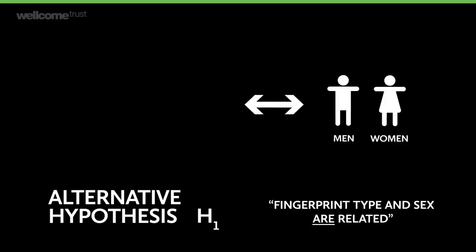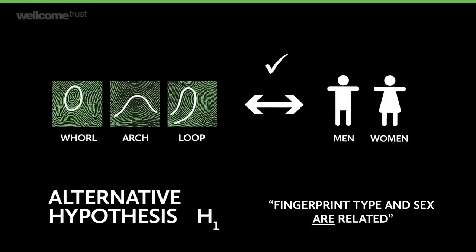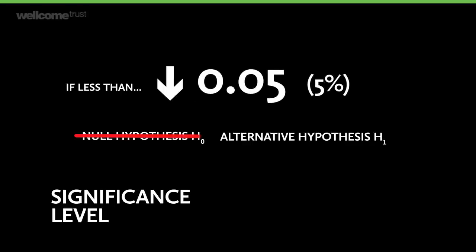The second hypothesis is the alternate hypothesis — the other possibility — that men and women do tend to have different fingerprint types. In that case, we would say there is an association between a person's fingerprint type and their sex. The significance level is the value we choose for how strong the evidence should be before we reject the null hypothesis; it's normally 0.05. That means if the probability of a more extreme result than the one we get is less than 5%, we reject the null hypothesis and accept the alternate. Otherwise, we say we don't have enough evidence to reject the null hypothesis.